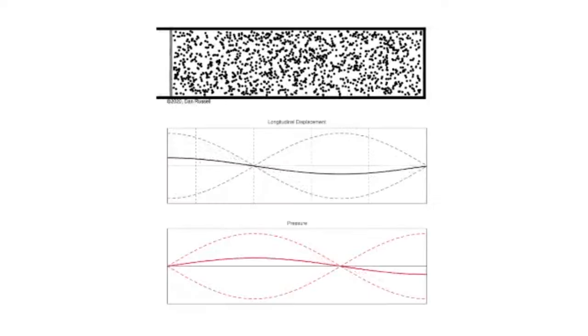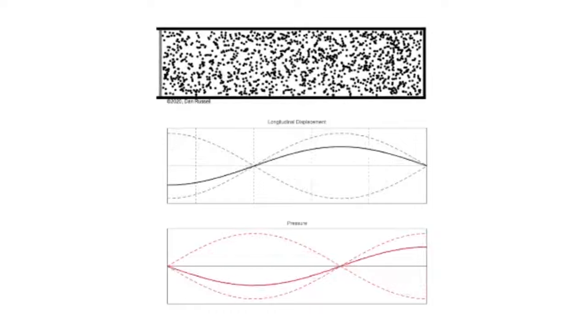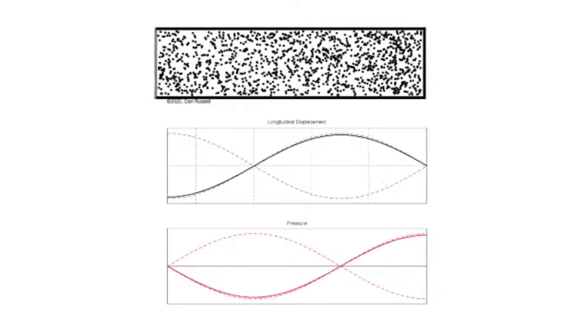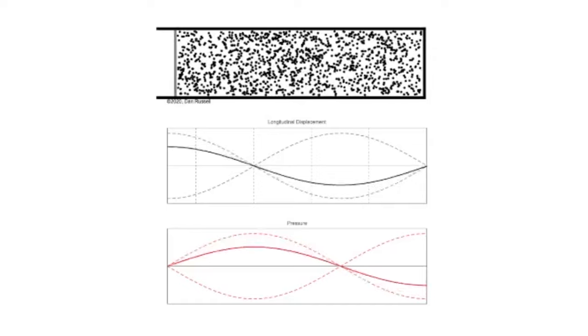Let's set up one more demonstration. Up until this point, we've been looking at transverse waves, where the medium — the strings and springs — has moved perpendicular to the direction of the wave. However, sound waves are longitudinal, meaning that the medium vibrates parallel to the direction that the wave travels.